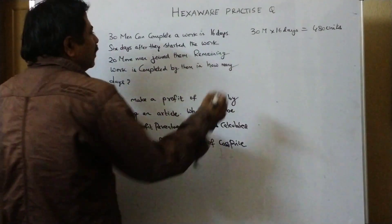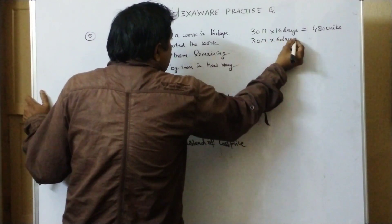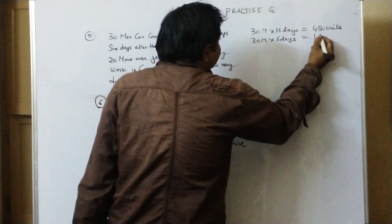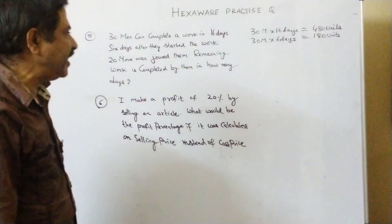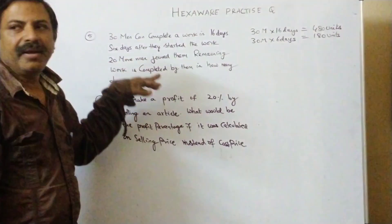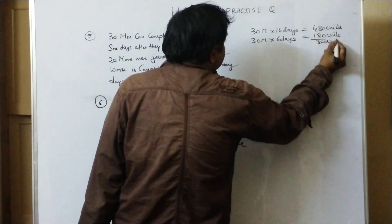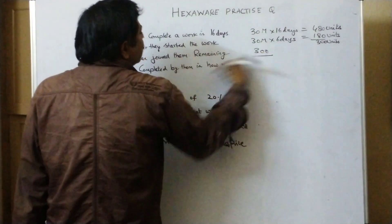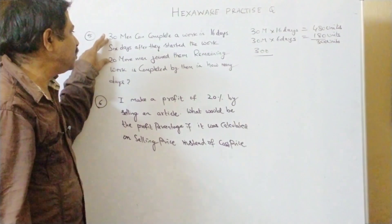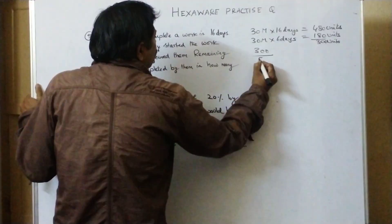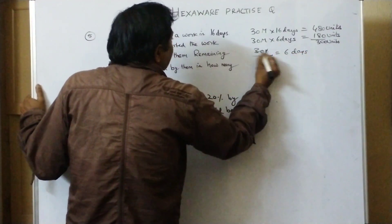Now, 6 days after they started the work. So 30 men are working for 6 days. What happens? 180 units. 30 into 6 is 180. Units of work have been completed by them in 6 days. 20 more men joined them. 480 minus 180, it is 300 units which is left. For doing these 300 units, earlier we had 30 men. 20 more men joined them. So what do we have? 50 men. That is equal to 6 days.